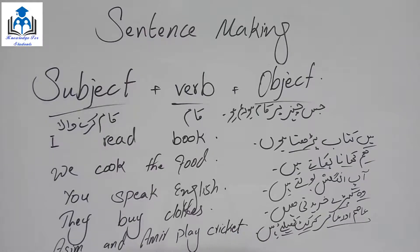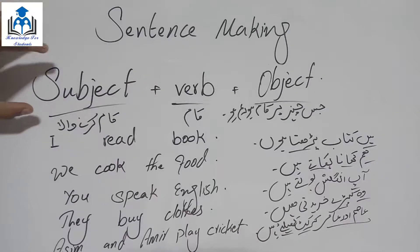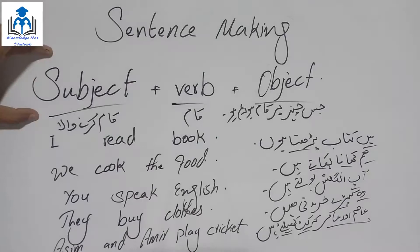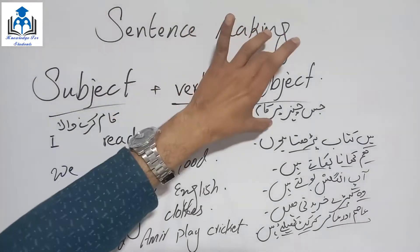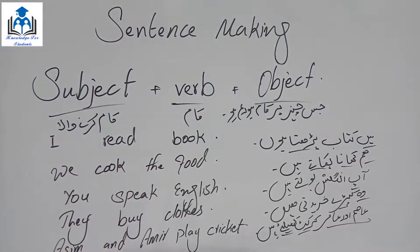So → Aasim and Aamir play cricket. Guys, this SVO structure is the main thing — if you understand this, you can make thousands of sentences on your own. It's not difficult, it's very simple and very easy.